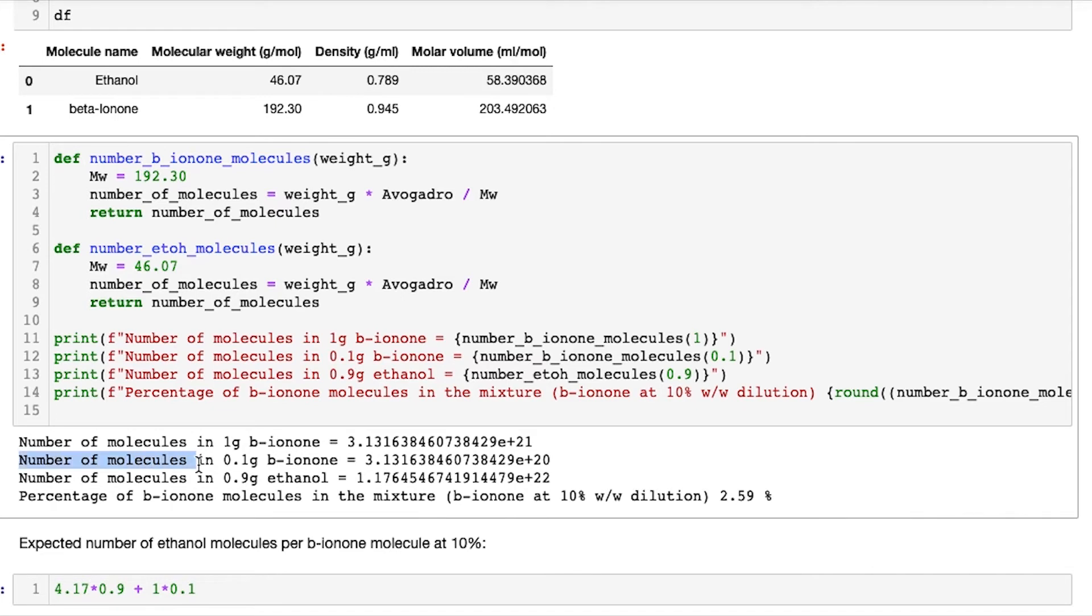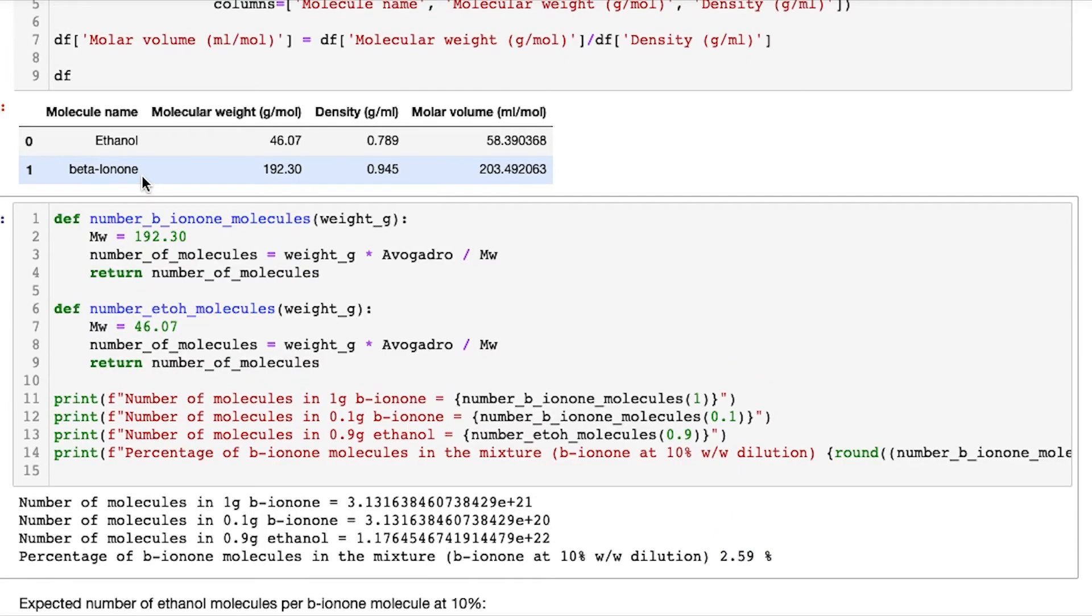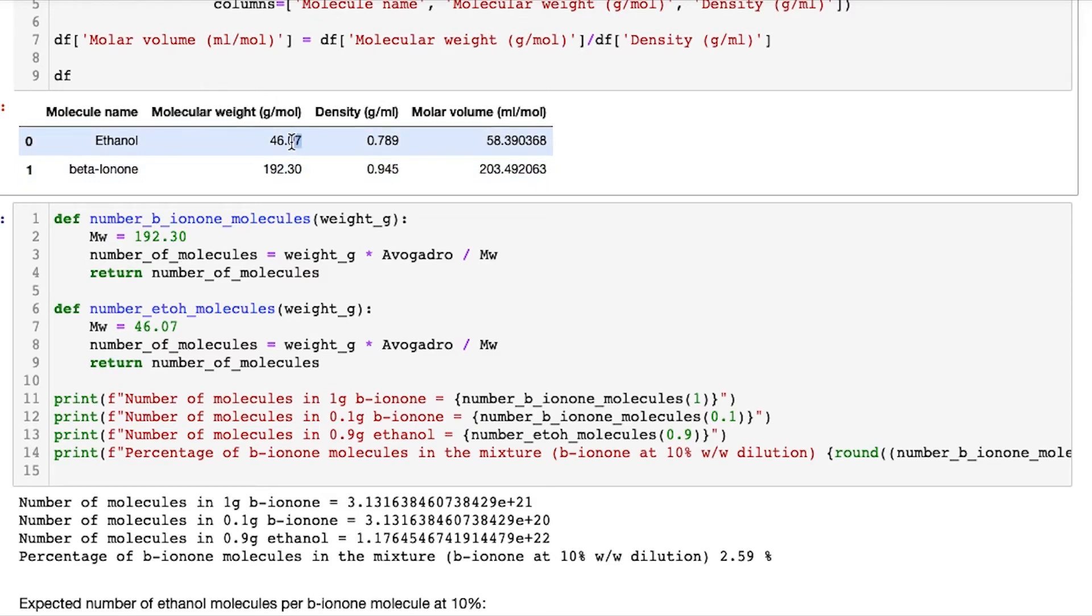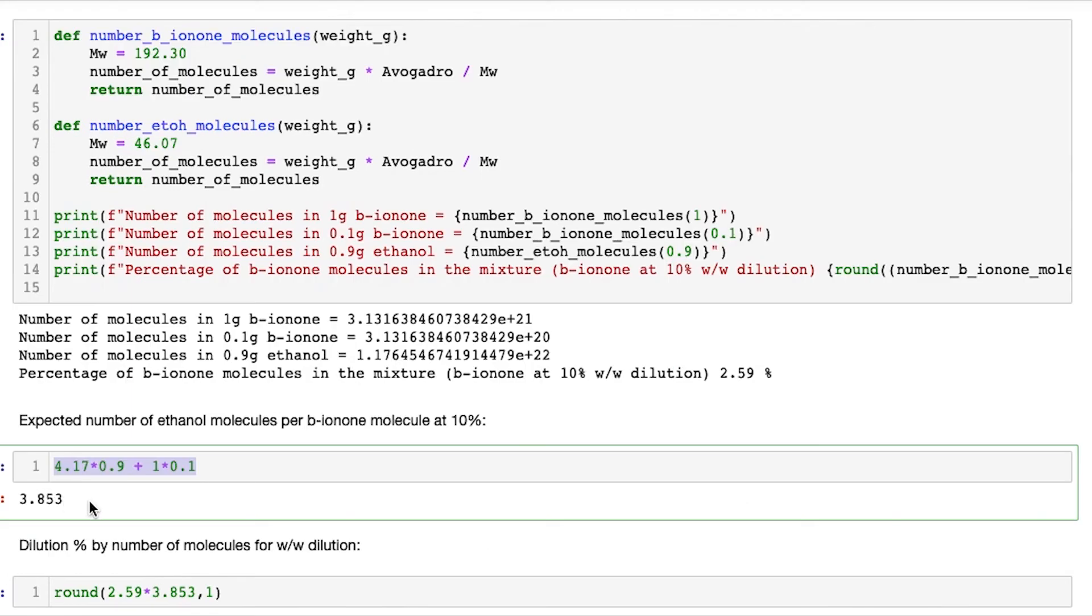Now the next two lines say, well instead of having a pure one gram of beta-ionone, what if we wanted a one gram where we had a 10% dilution? So let's calculate the number of molecules of 0.1 grams, which is how much we're putting in at 10%, because 0.1 is 10% of one. How many molecules are in this 0.1 grams we've added? And then the remaining 0.9 grams, which must be our solvent ethanol, how many molecules are there? Now this last line is, if you take this number of molecules as a percentage of the molecules in the whole mixture of both of these together, in that one gram total, well what we find is that only 2.59% of the molecules are beta-ionone. The reason it's only 2.59% is like I was saying above, you can see that the beta-ionone is about four times heavier, so you get less molecules in it.